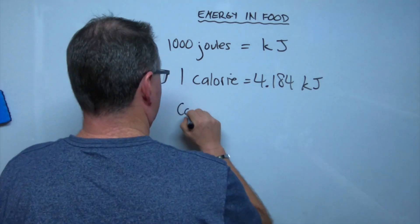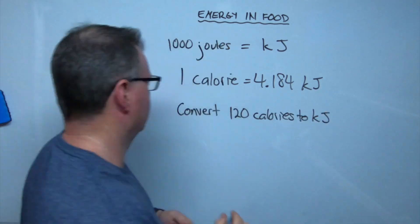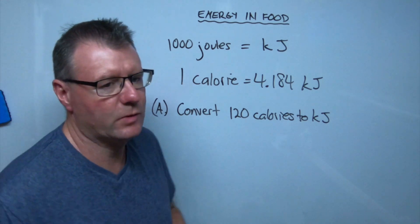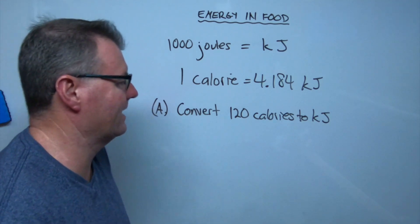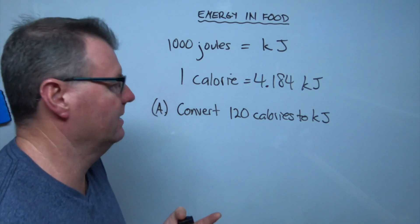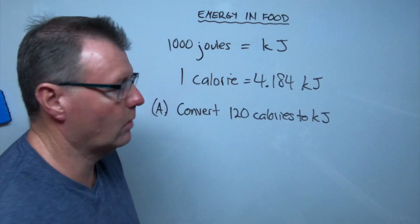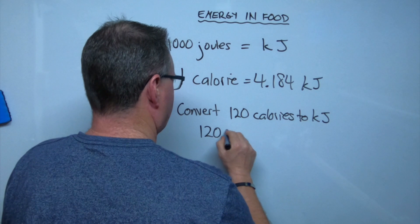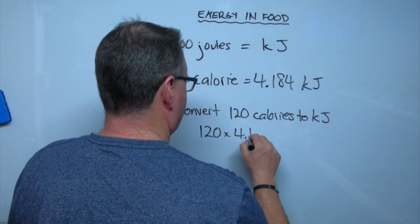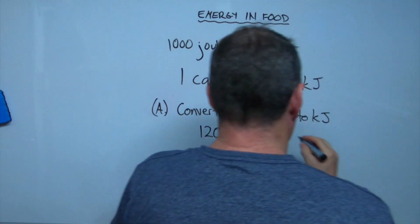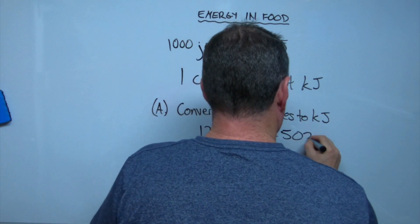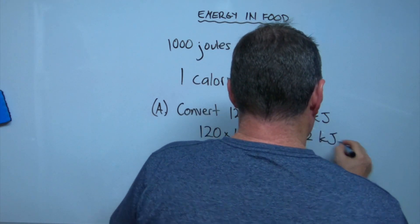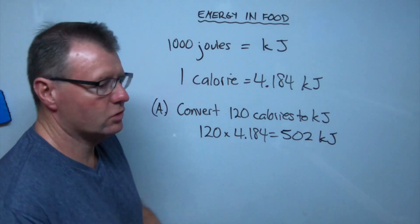So let's look at a couple of questions. All right, so what if you were asked to convert 120 calories, how many kilojoules would that be? Well, if one calorie is 4.184, we simply multiply. So in this case, it's 502 kilojoules.